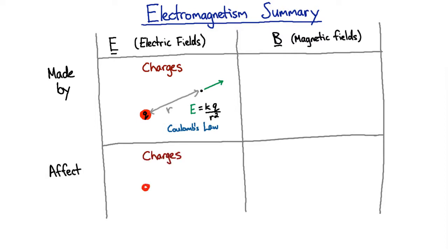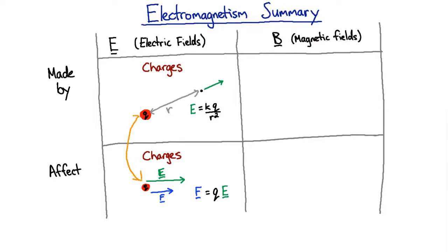Electric fields affect charges. If I have a charge in an electric field made by something else, there is a force on that charge. The force is just proportional to the electric field and the charge. Coulomb's Law talks about the force between two charges, so it kind of skips the electric field in between — we can sort of put Coulomb's Law in between the two.